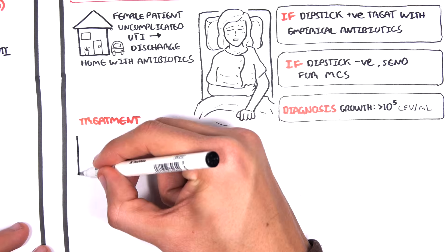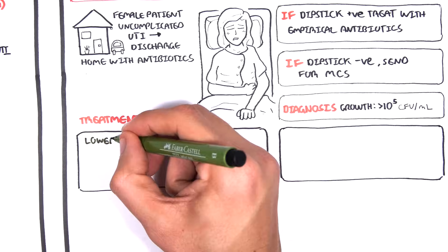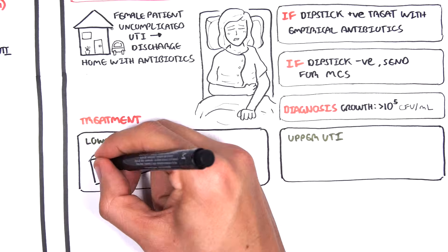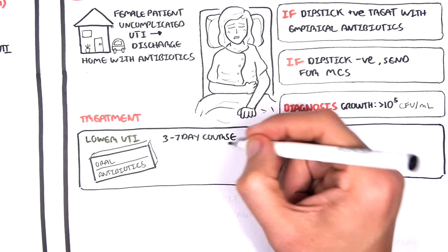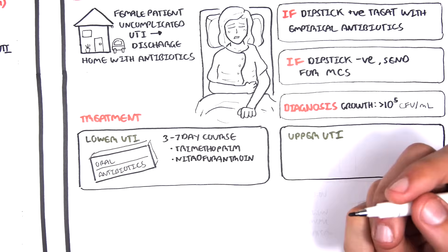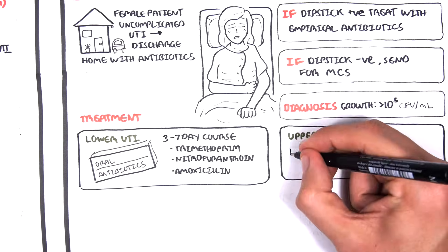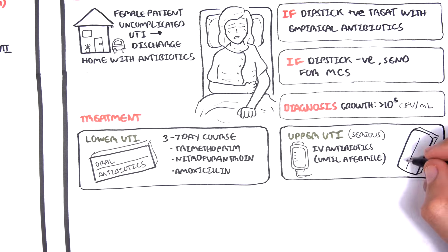The treatment of UTI is essentially empirical antibiotics. For lower urinary tract infections, it is typically a three to seven day course of oral antibiotics, consisting of either trimethoprim, nitrofurantoin, or amoxicillin. Upper UTIs are generally more serious and require IV antibiotics initially until the fever has settled, then moving on to oral antibiotics. The course of antibiotics is generally longer with upper urinary tract infections.